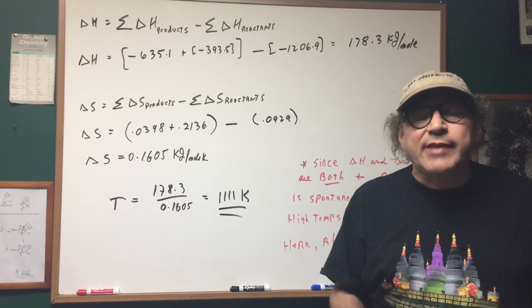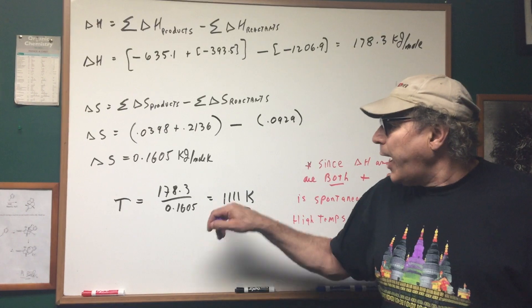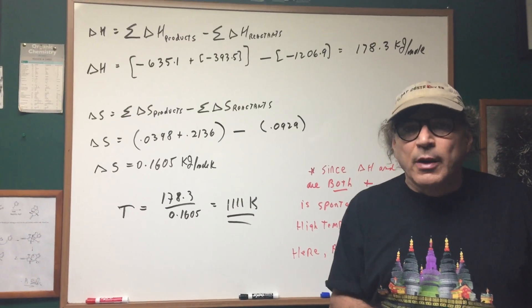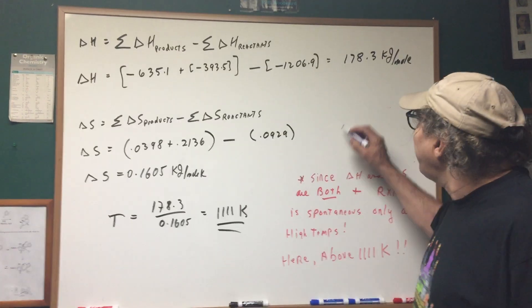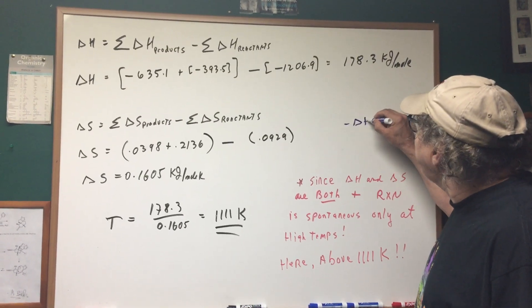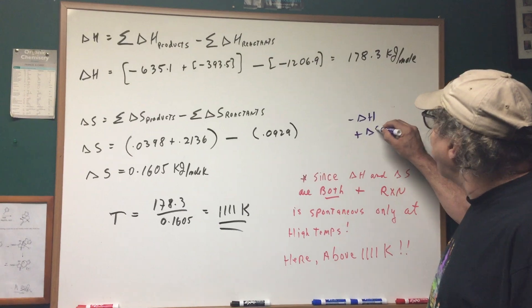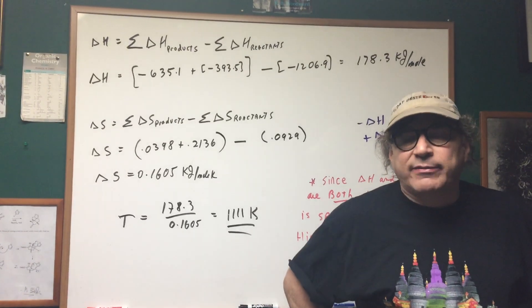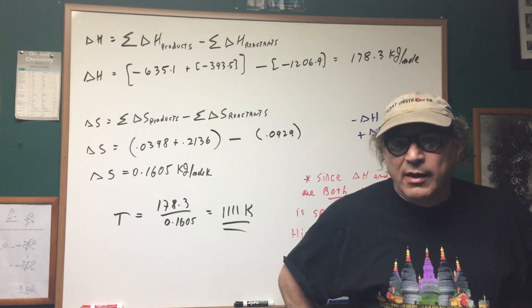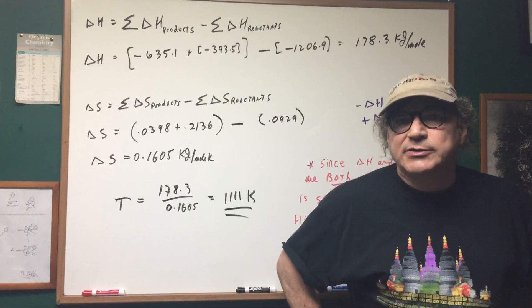If the Delta H was negative and the S was negative and you found the equilibrium temperature, then the reaction is spontaneous only at low temperatures. And finally, if you ever see a negative Delta H and a positive Delta S, that means the reaction will be spontaneous at all temperatures. And that's the favorite type of question you're going to see on the DAT.